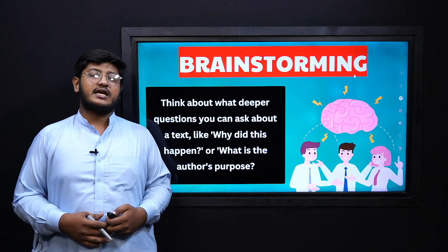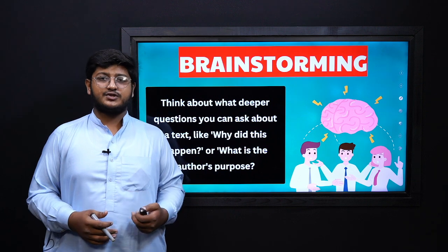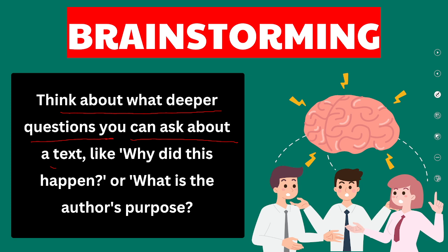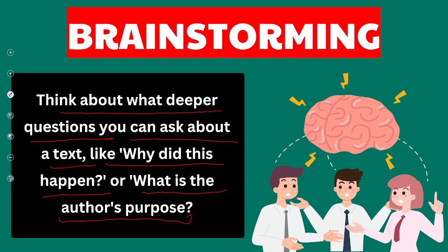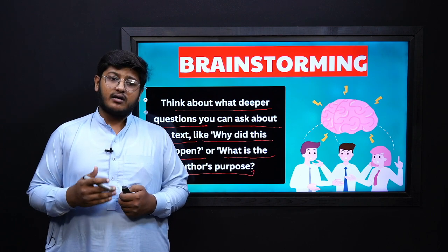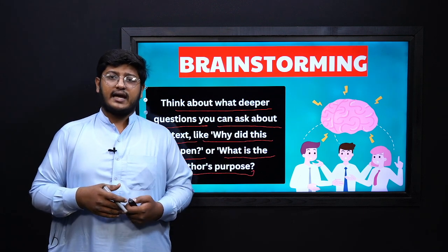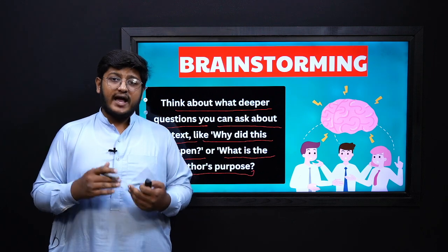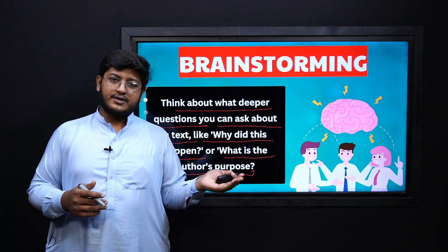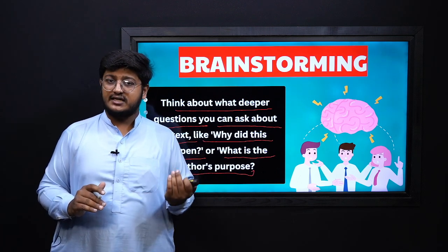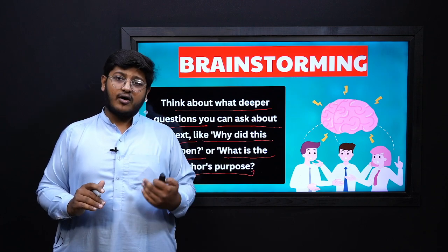Here is the brainstorming activity. Think about what deeper questions you can ask about a text — like 'Why did this happen?' or 'What is the author's purpose?' We can ask simple questions very easily about names, things, or actions. But there are also tougher questions that assess you at a higher level — like why something is happening, how it is happening, or why the author used a particular word. These are considered higher order skills because they check your analytical and critical abilities.